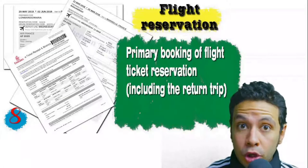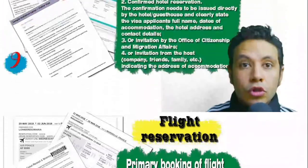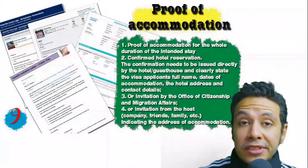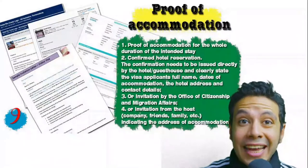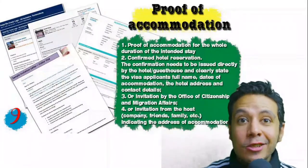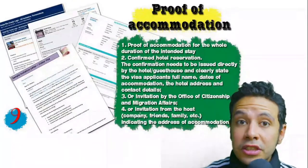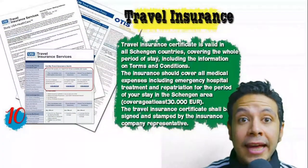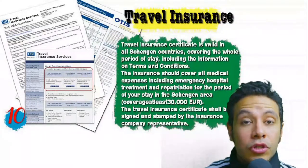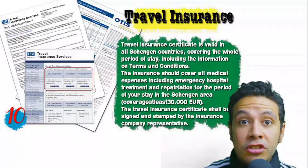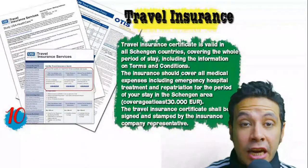You should also provide a flight reservation — an initial booking is usually acceptable, but in some cases a confirmed booking is required, and it must include a return ticket. You will also need proof of accommodation: a confirmed hotel reservation, an invitation from a host, or an invitation from an organization you are visiting. For hotels or hostels, an initial booking is acceptable in most cases. If invited by a person, the invitation letter should be mailed directly to the embassy or submitted by you along with a copy of that person's passport. Many countries, especially Schengen area countries, also require travel insurance with a minimum coverage of 30,000 euros.